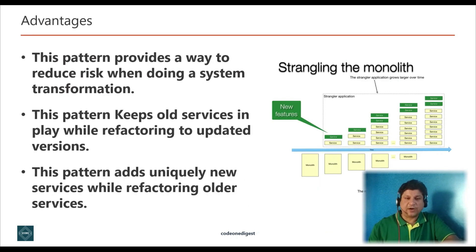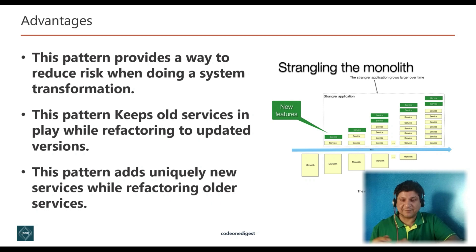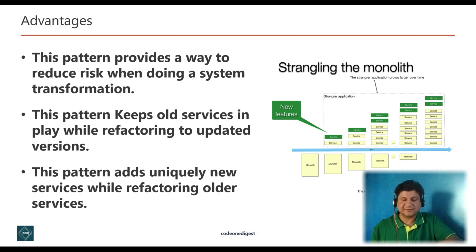What advantages do we get by applying the strangler design pattern? The strangler design pattern provides a way to reduce risk when doing a system transformation. It keeps old services in play while refactoring to updated versions, and it also adds unique new services while refactoring old ones — hence both systems, new and old, coexist for some time. This coexistence helps in validating functionality in both the old and new system at the same time, to make sure that user experience, user behavior, and handling are not changed with the new application.